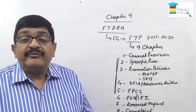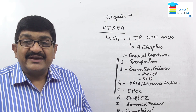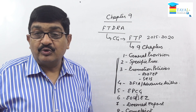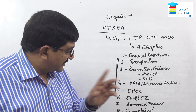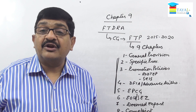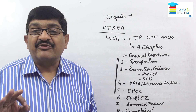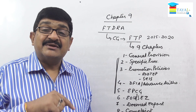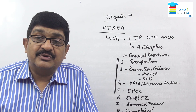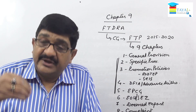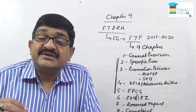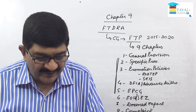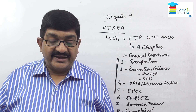For Export Oriented Units or units in SEZ, the procedures differ regarding what they can import, how they can import, how much material they can utilize, how much they can dispose of in the local market, and how much they can export — all governed under chapter six. Chapter seven covers deemed exports: certain transactions within the territory of India treated as if those are exports, meaning material does not leave Indian territory. Chapter eight handles disputes between supplier and importer-exporter. Chapter nine provides all important definitions.